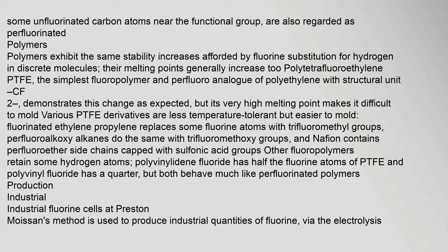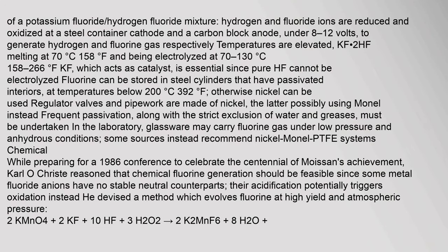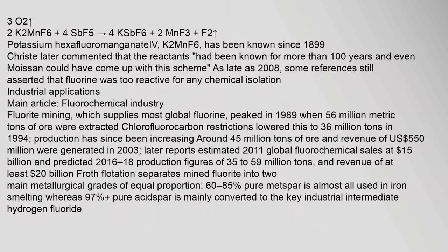Moissan's method is used to produce industrial quantities of fluorine via the electrolysis of a potassium fluoride–hydrogen fluoride mixture. Hydrogen and fluoride ions are reduced and oxidized at a steel container cathode and a carbon block anode, under 8–12 volts.